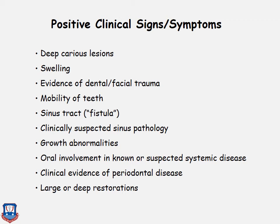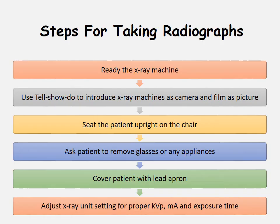The basic steps for taking a radiograph: first, ready the X-ray machine and introduce the child to the radiographic room and the machine. Use the tell-show-do technique — introduce the X-ray machine as a 'camera' and the film placed in the oral cavity as the 'picture' that will be taken.